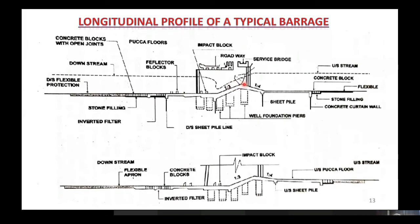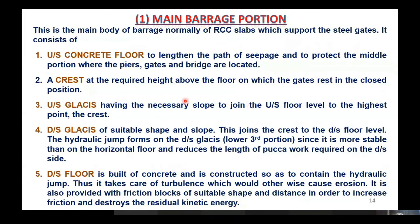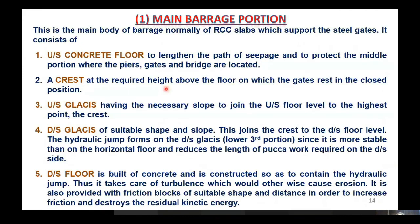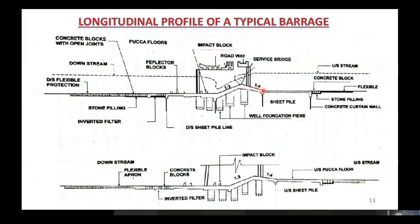On the crest of the weir, the gate rests when we want to completely close the flow. The crest is the highest flat portion of the weir. The upstream glacis is the sloping RCC slab in between the downstream part of the upstream concrete floor and the crest.